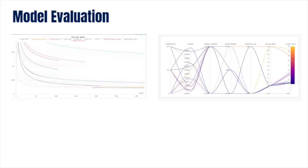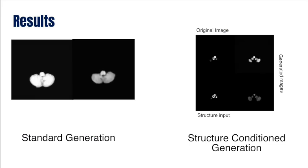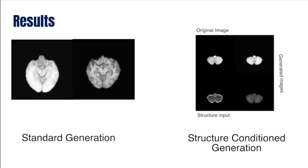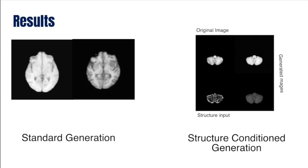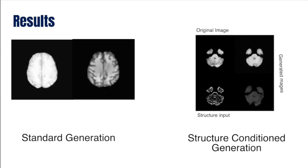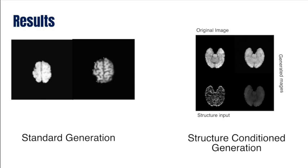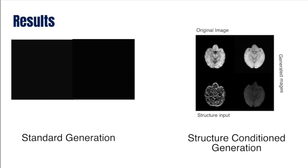We run hundreds of experiments to determine the best possible model for image generation, beating the previous best-in-class model for medical image generation. Here are some of the results for image generation. In addition to standard generation, we also test some of the best methods for conditioning diffusion models. For example, you can see on the right generations conditioned on the edge image.